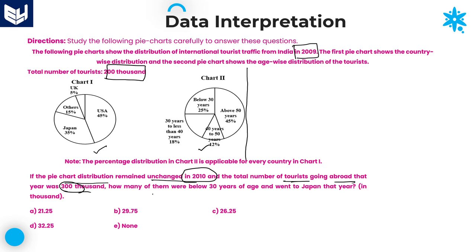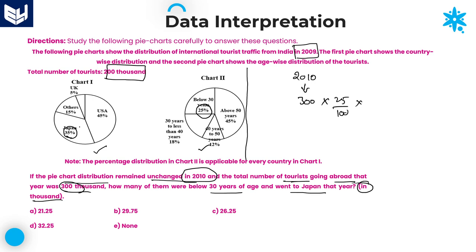The question asks: how many of them were below 30 years of age who went to Japan in 2010? We want the answer in thousands only. Total in 2010 is 300,000 — I'll write 300 since we want thousands. Below 30 years is 25%. Japan is 35%. Two zeros and two zeros cancel. So 25 divided by 4 times, and 35 into 3 = 105 divided by 4.